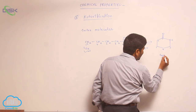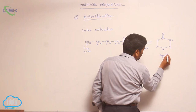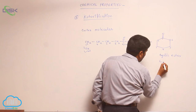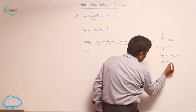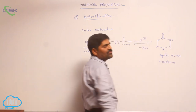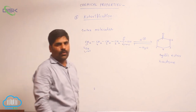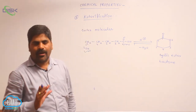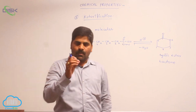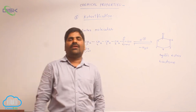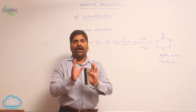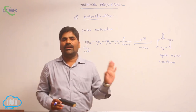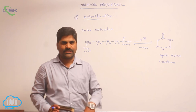This cyclic ester is commonly known as a lactone. Smaller size of an alcohol easily reacts with smaller size of carboxylic acid to form an ester easily. This particular process is known as esterification.